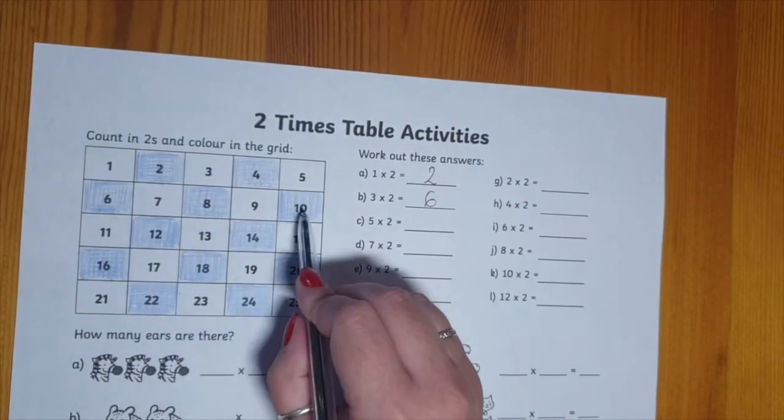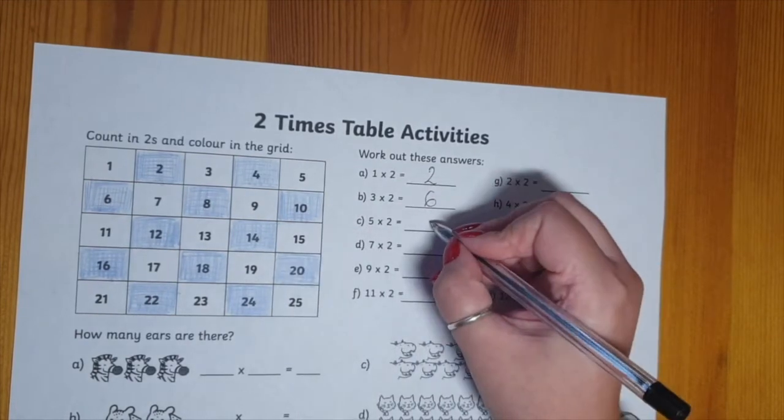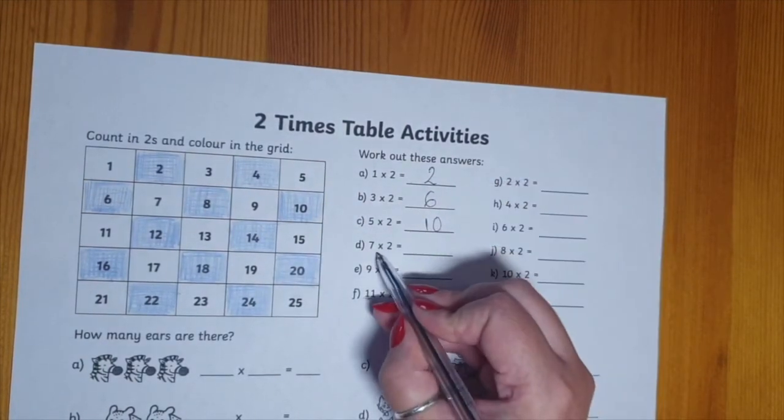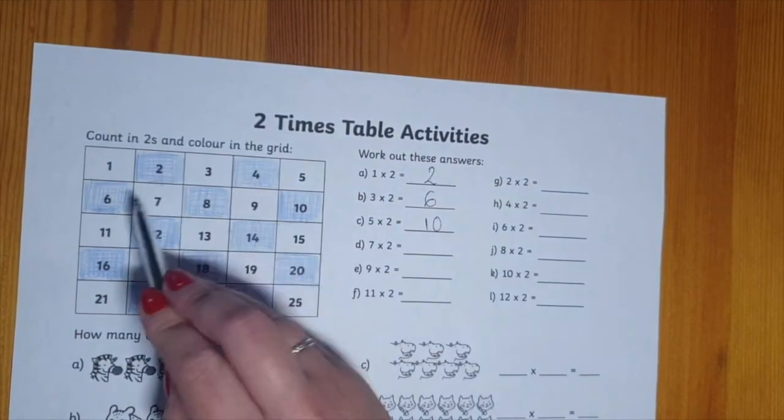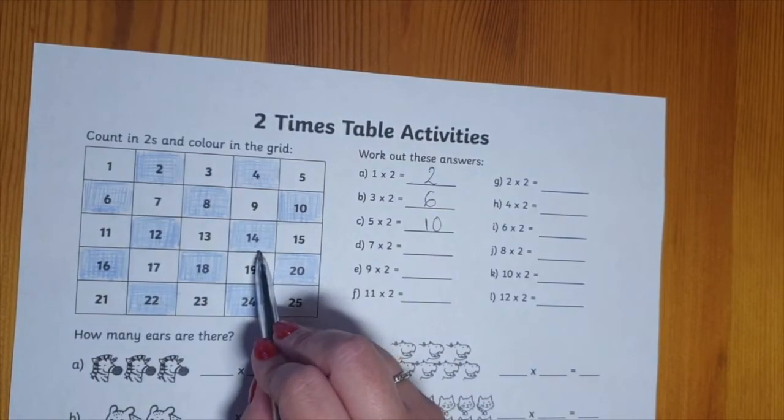Five times two. Five times two is ten. Seven times two. Seven times two is fourteen.